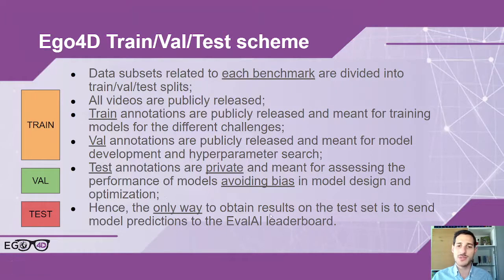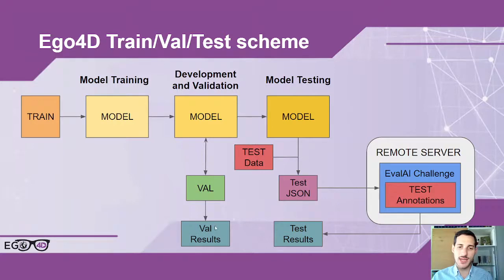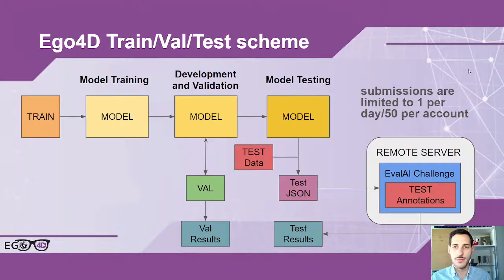You are not supposed to perform hyperparameter tuning on the test set — we keep these annotations private to make this harder. The only way to obtain results on the test set is to send model predictions to the EvalAI leaderboard. You train your model on the training set, use validation data and annotations to fine-tune your architecture and hyperparameters, and obtain validation results directly on your machine. Once satisfied, you use the test data to produce a test JSON with your predictions, send it to a remote server, and receive your test results. Note that submissions are limited to one per day and 50 per account in total, to avoid overfitting on the test set.